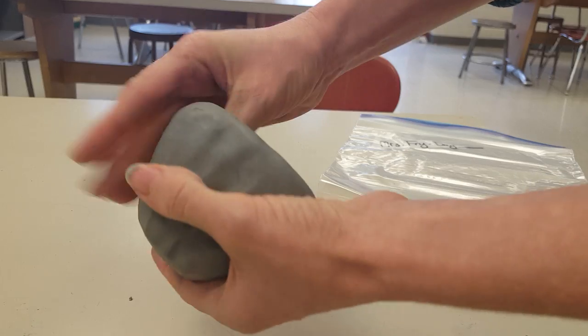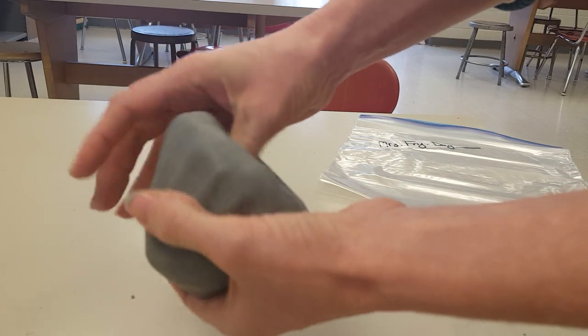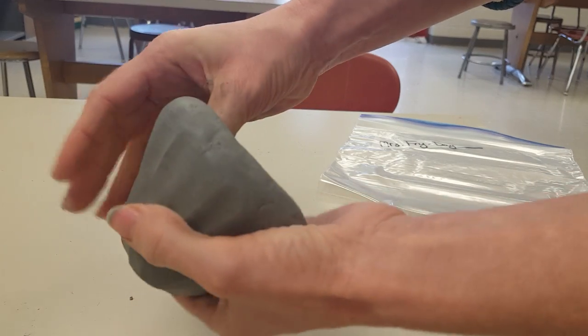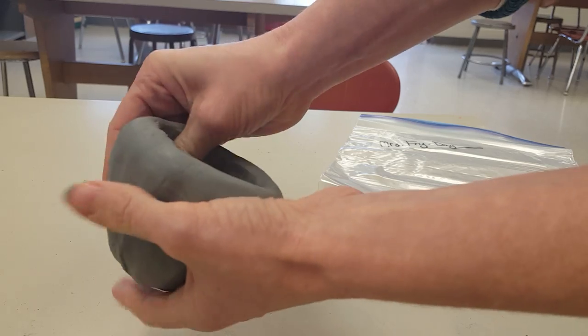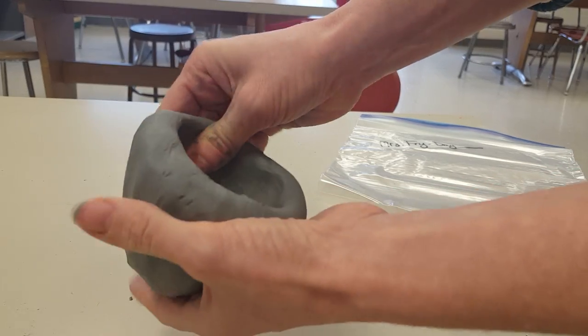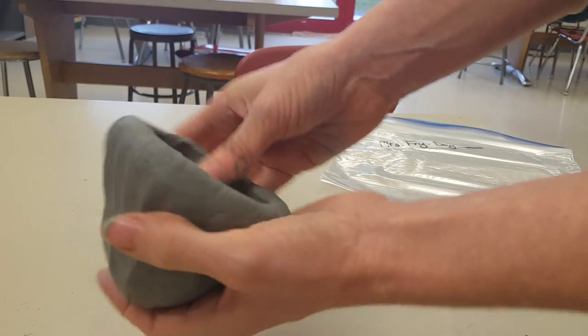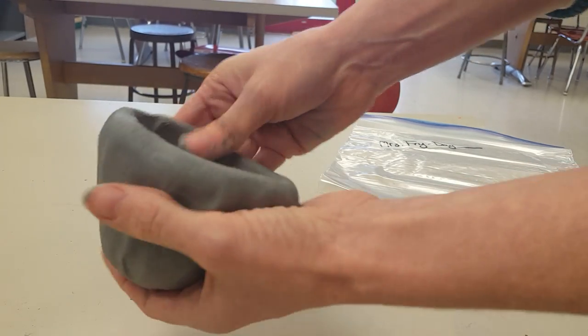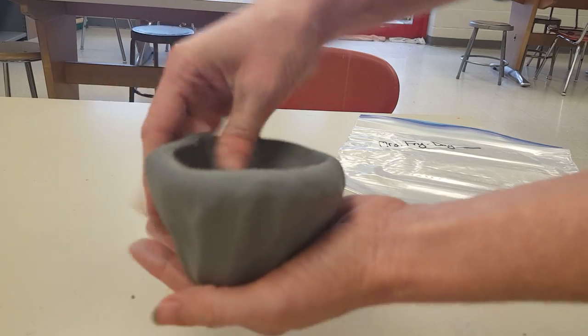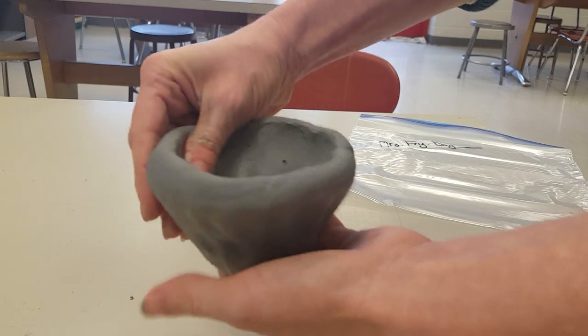So I'm going to continue to pinch my clay until I have a very uniform thickness, which means that some areas aren't super thin while other areas are super thick. I would like it to all be the same thickness, and you want to keep your thumb in your pot.